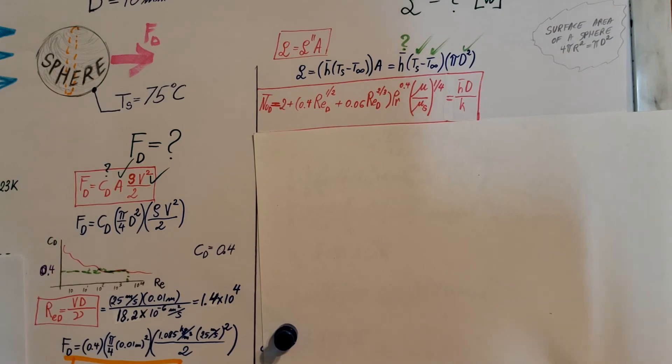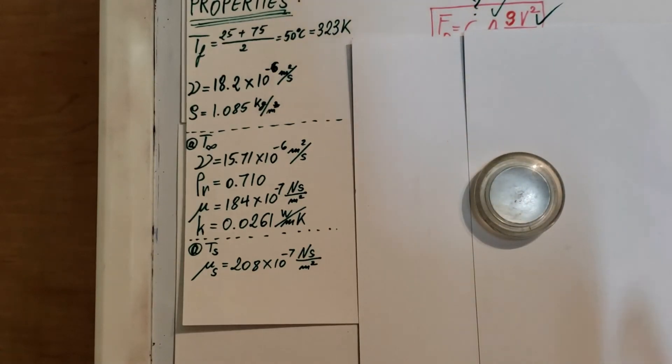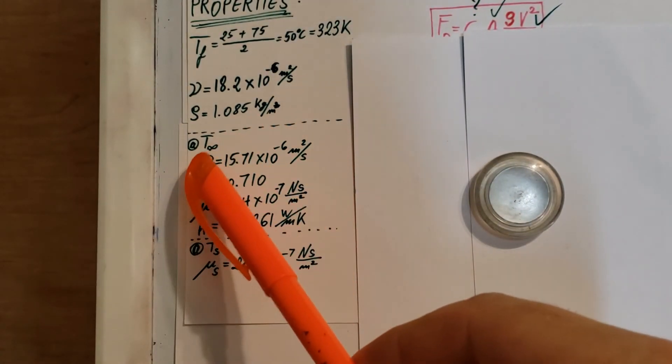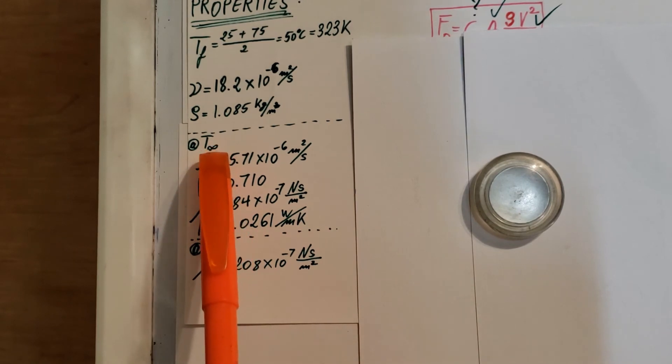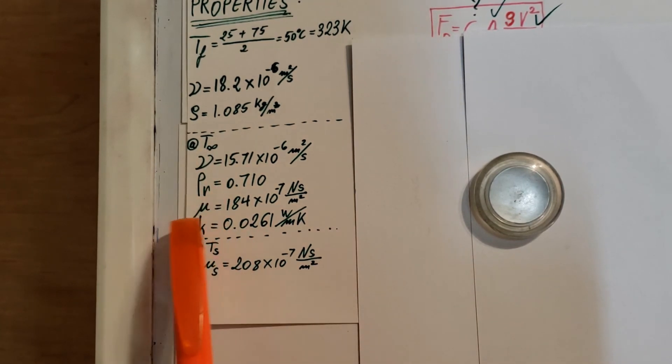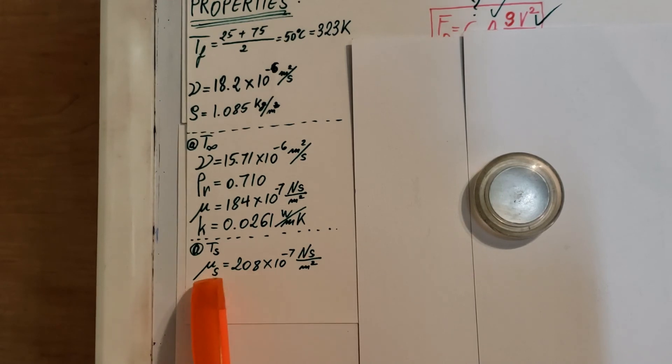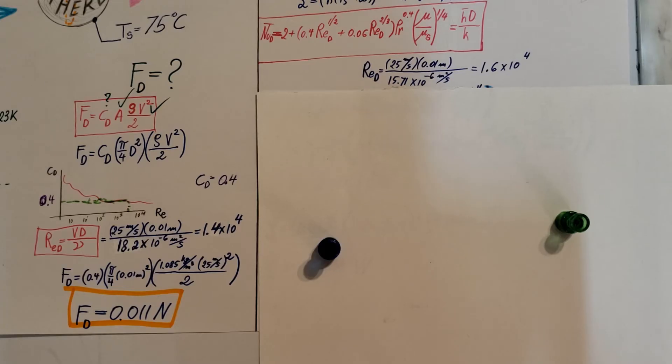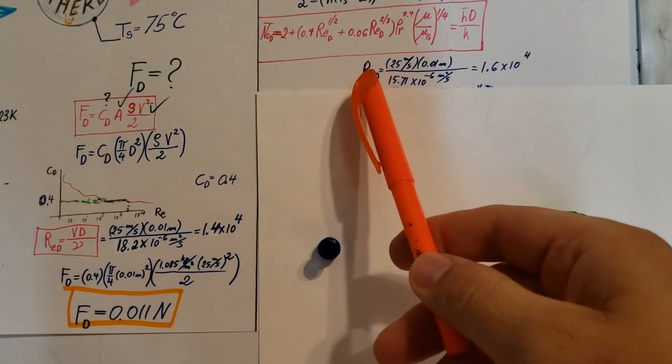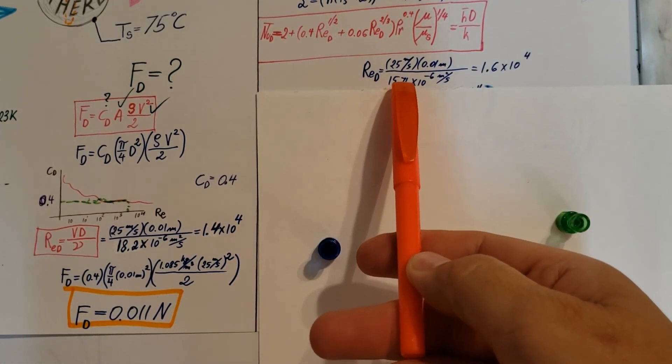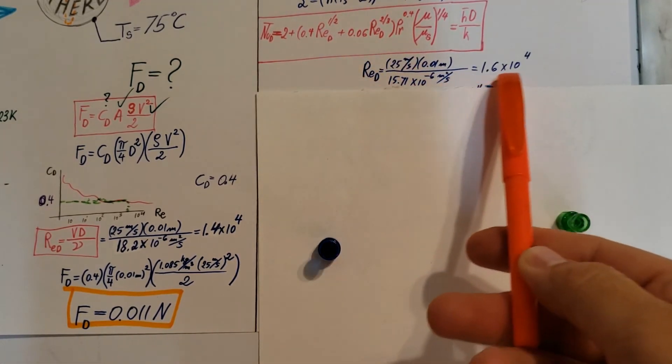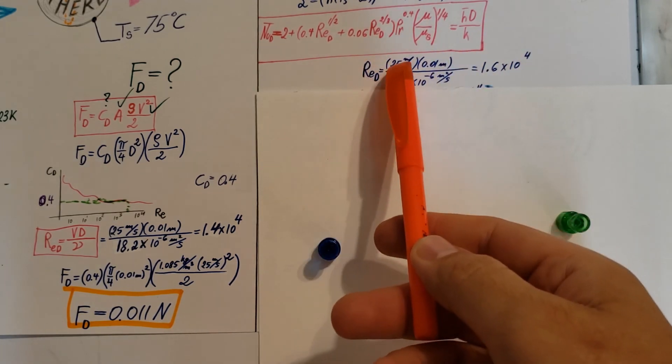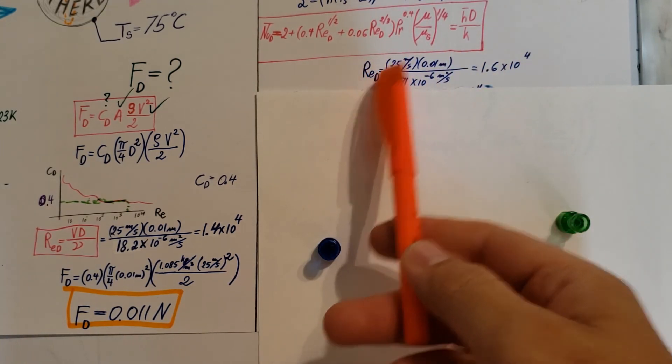So let's go ahead and find properties. Okay, here it is, all our properties that we need to find at T infinity: kinematic viscosity, Prandtl number, dynamic viscosity, and conduction coefficient. And we also need to find dynamic viscosity at the surface temperature. So those are everything we need. So first step, now that we have our new kinematic viscosity, let's find our new Reynolds number, the one based on T infinity, right? 1.6 times 10 to the fourth.